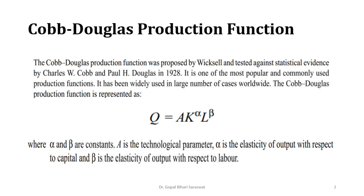Here, alpha and beta are constants. A is a technological parameter. Alpha is the elasticity of output with respect to capital, which means that if you make a change to capital, how the change in total production happens. Similarly, beta represents how production changes if you make a change in labour — the contribution of labour and capital to total production.